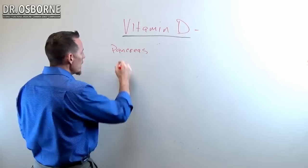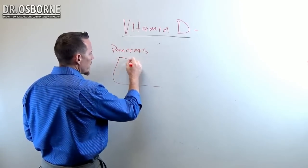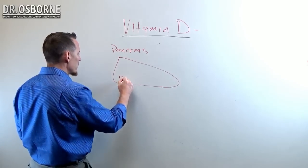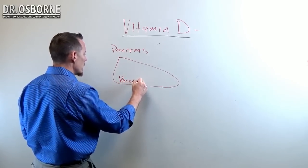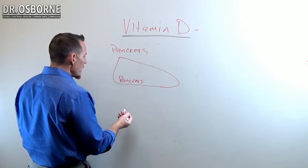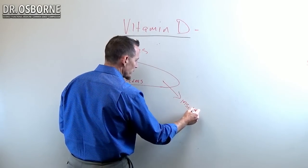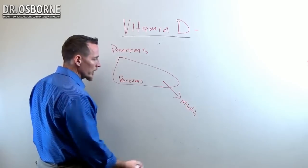I'm going to draw you a very rudimentary diagram here. This is your pancreas. What happens is your pancreas is supposed to secrete insulin, and then insulin takes the sugar in your blood, your glucose, and puts it inside the cell.